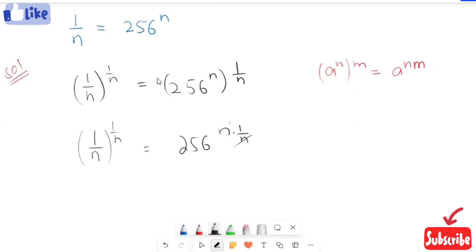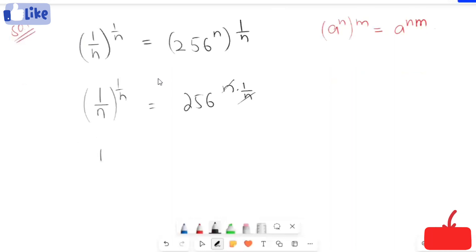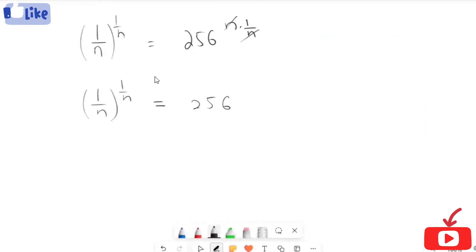Next, we got 1 over n raised to power n is equal to 256. Now here, our aim is to make the right hand side in the same form as the left hand side. For that, I'm going to change 256 into the form of a power.